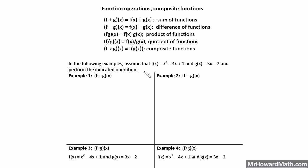So that's composite functions — we'll look at examples and it will make more sense. In the following examples, assume that f of x is x squared minus 4x plus 1, and g of x is equal to 3x minus 2, and perform the indicated operation. We have f plus g of x.